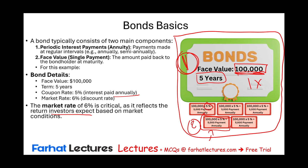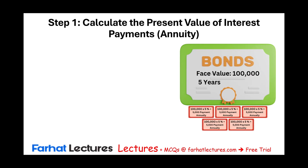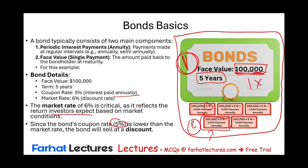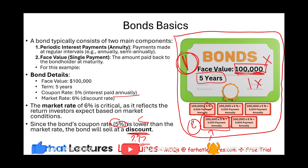Before we compute the price, you have to understand: since the bond coupon rate of 5% is lower than the market rate of 6%, this bond will be sold at a discount. That means the company will not get $100,000. If the opposite were true — if the coupon rate were 8% — the bond would sell at a premium. For now, all I'm focusing on in this session is the application of the time value of money.